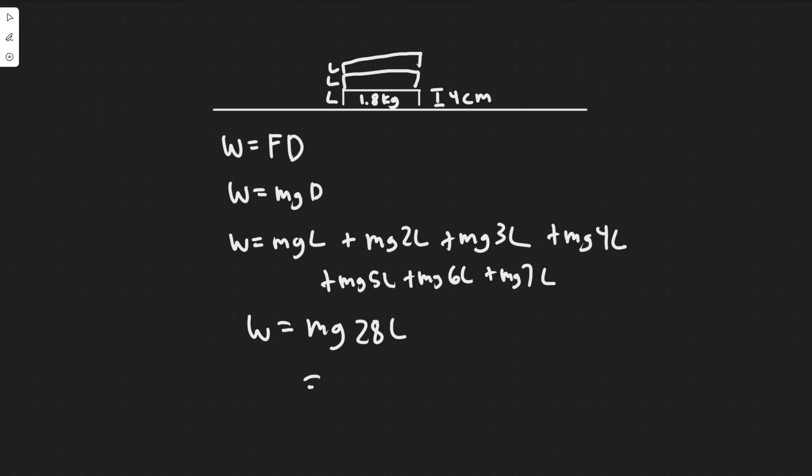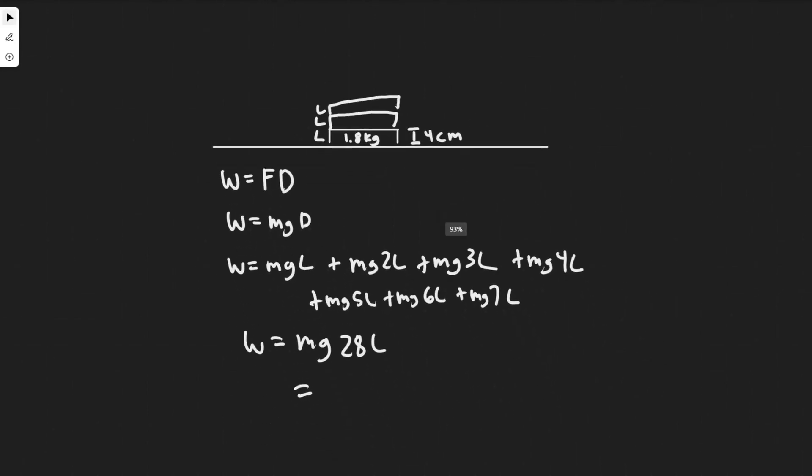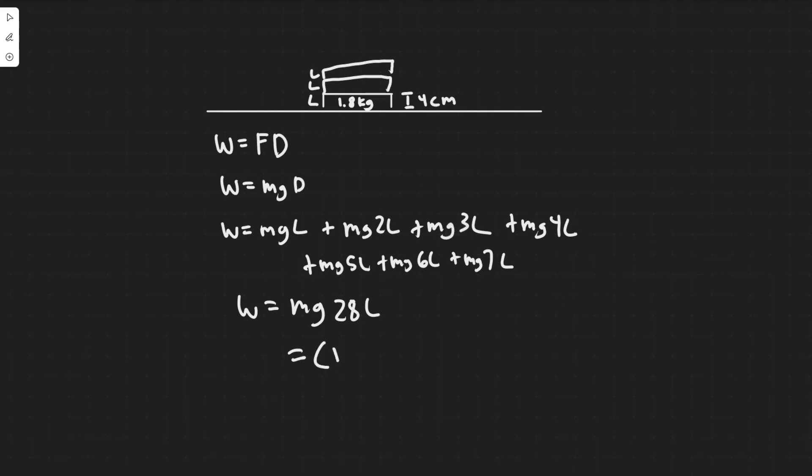So yeah, basically that was the hard part of the problem, just understanding that idea of how you could just simplify it to L, and then you can just add them like this. So the mass of the book, they're all the same, 1.8 times g, which is just acceleration due to gravity, which you should know is 9.8 times 28.